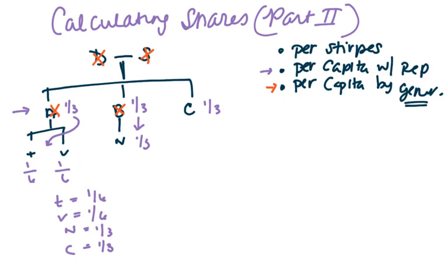So what would this look like if we use per capita by generation? Well, again we would divide at the first generation where there's a living taker, so we would still get a third, a third, and a third. C would take a third.